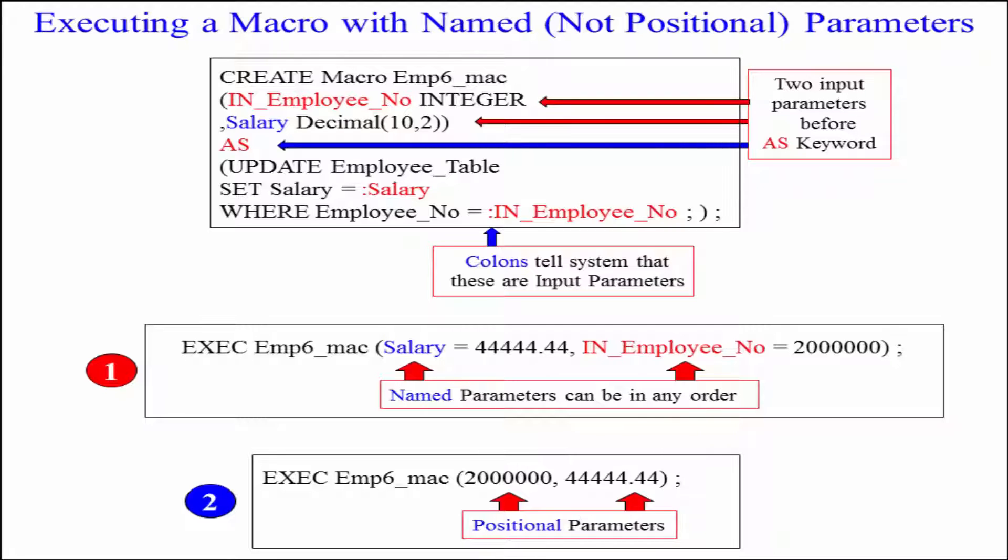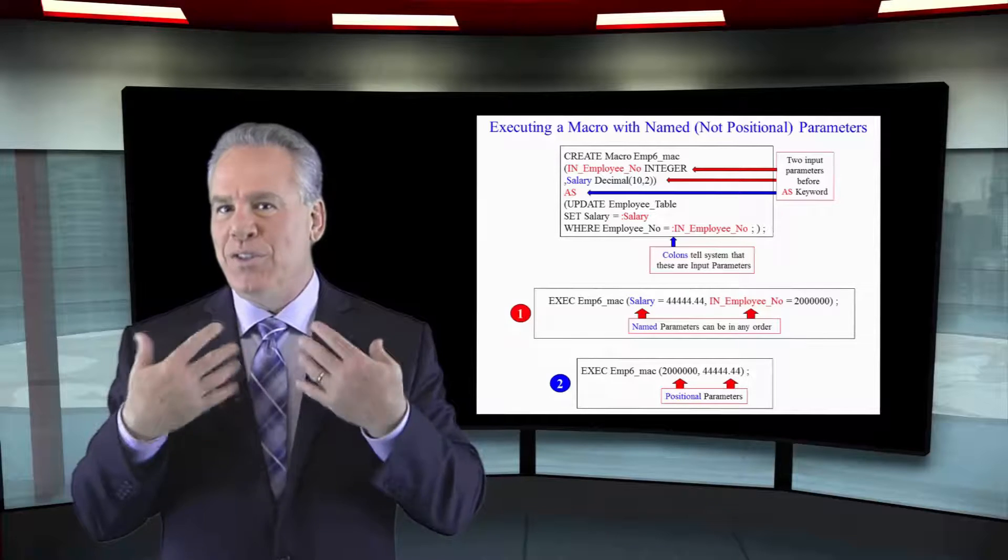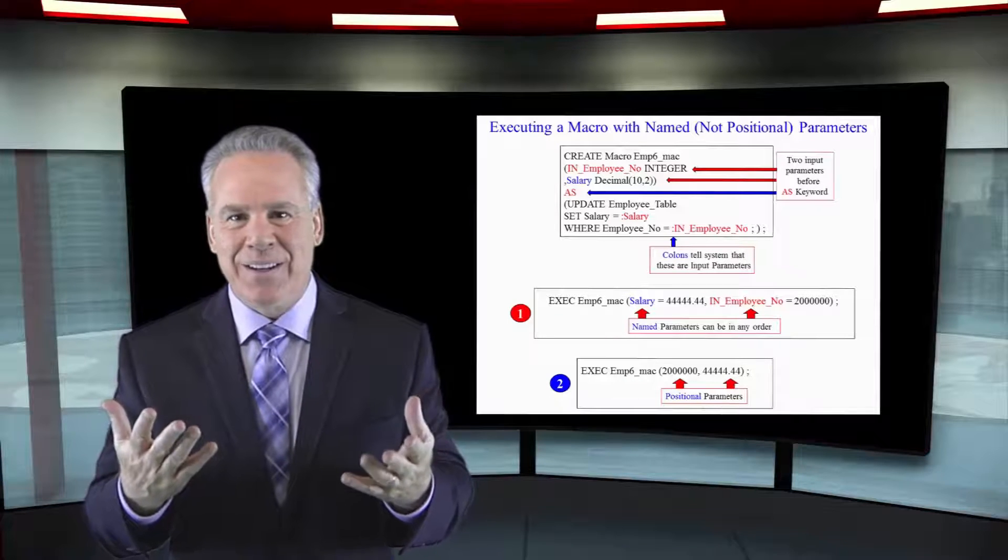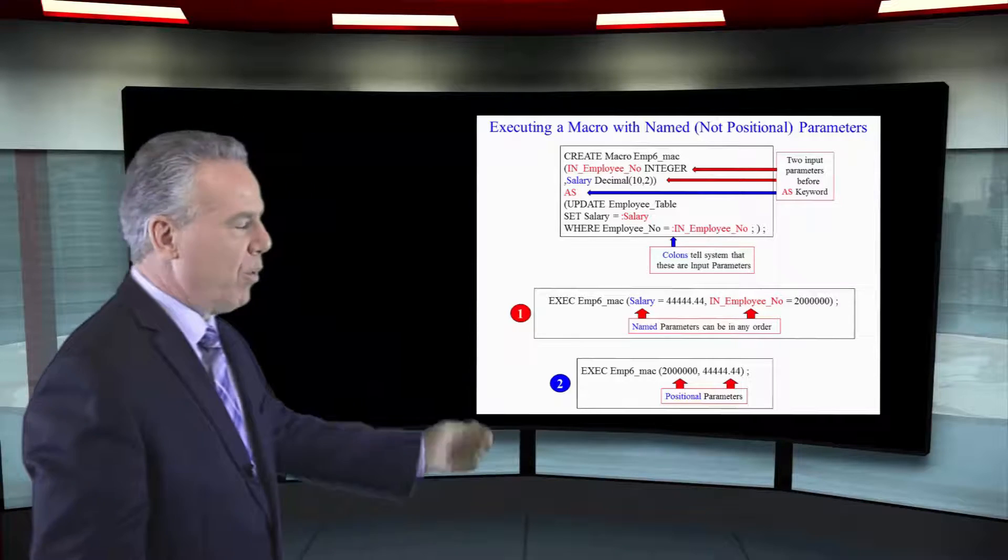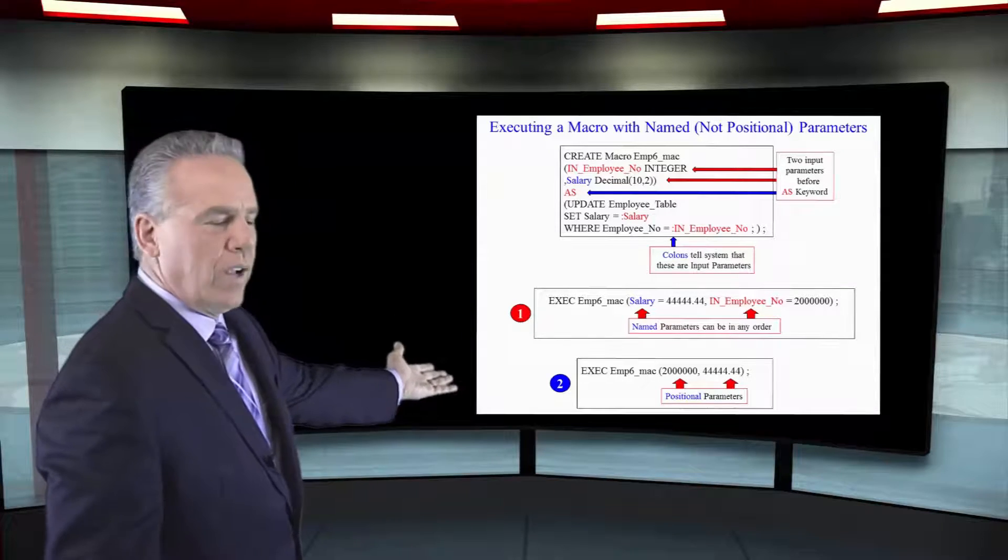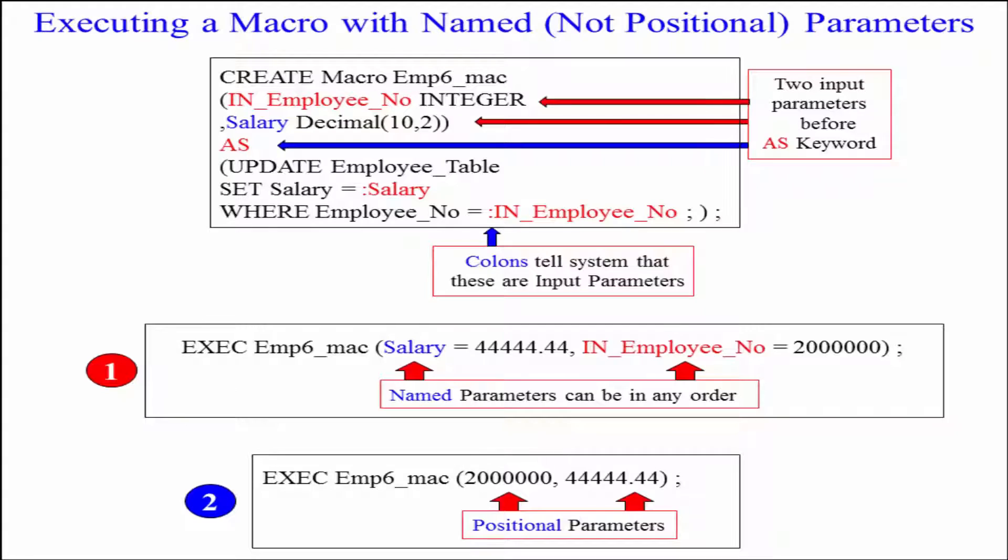As you can see in example one we're going to execute the macro and it doesn't matter what order we put the parameters because we actually give it a name: salary equals, IN_Employee_No equals, so it doesn't matter what position they're in because they're named. Now in our second example number two we've got positional parameters.